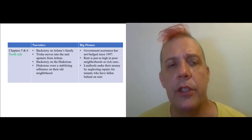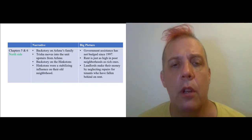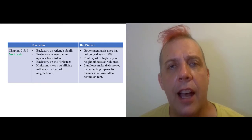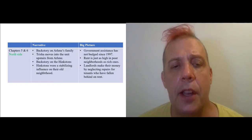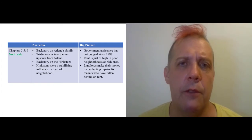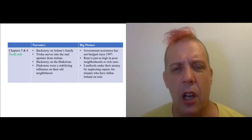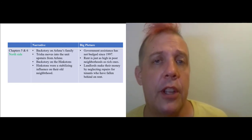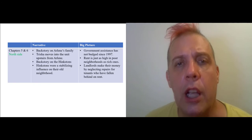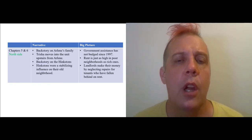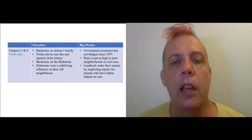The other thing we see in this chapter that's really important is this observation that rent is actually just as high in Milwaukee in the rich neighborhoods as it is in the poor neighborhoods. There's not much of a difference in rent. And Desmond asserts that this has been true since the 19th century. When I tried to research this fact for areas in northeast Ohio, my results were more mixed. And this might be a research project that you could do, which I think is interesting. But nevertheless, it's clear in Milwaukee that landlords are making their money by neglecting repairs for tenants who have fallen behind on rent.